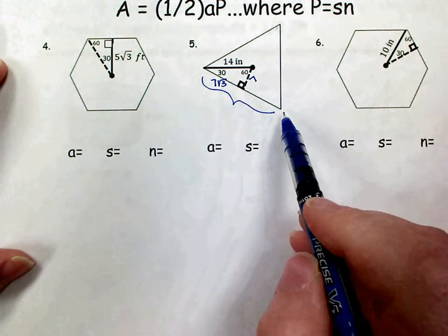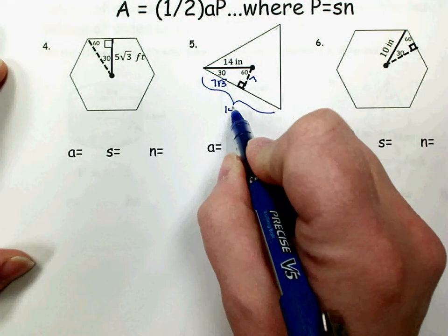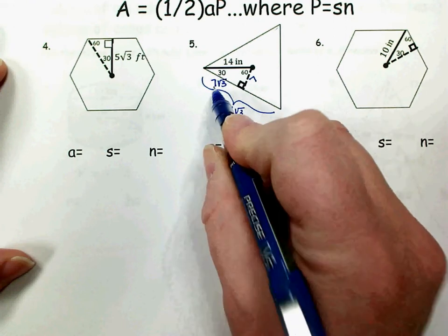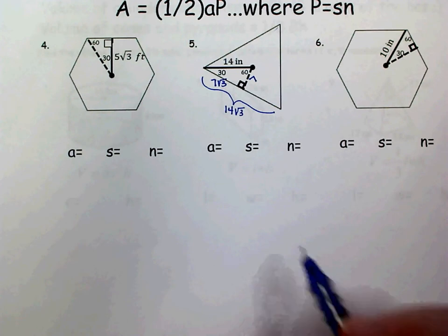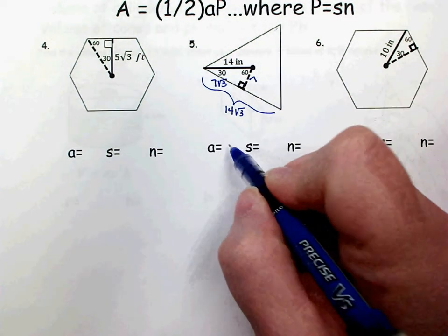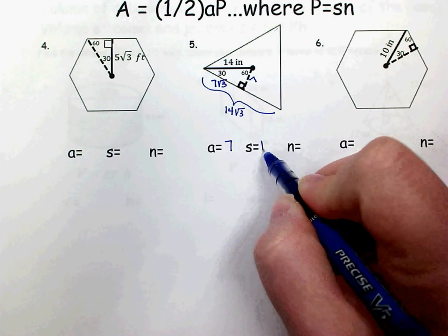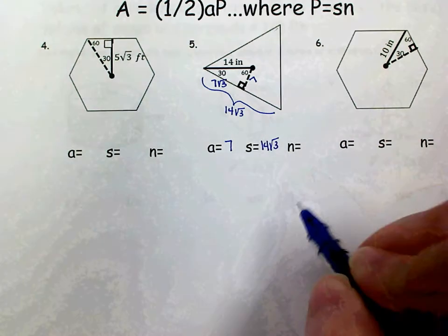Since that's half of the side length, I know my side length is just double that. And remember, only the number outside the radical would be multiplied by 2. So that's 14√3. So now I know my apothem is 7 inches, the side length is 14√3 inches, and I have 3 sides.